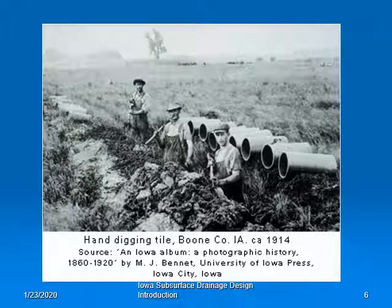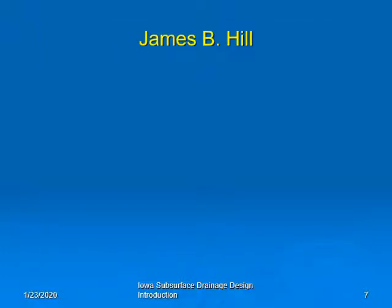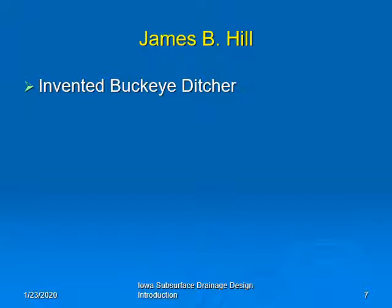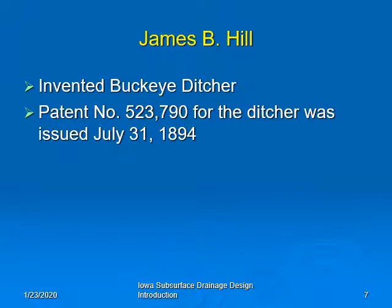Subsurface drains were initially installed by hand, and this continued into the 20th century. The larger drains were installed with the assistance of draft animals. By the end of the 19th century, mechanization led to the development of a mechanical ditching machine. James B. Hill invented the Buckeye Ditcher, and he was from Ohio. He received patent number 523,790 for the ditcher on July 31st, 1894.